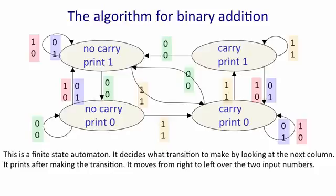So if you look on the top right, it's in the carry state and it's just printed a one. If it sees a one, one, it goes back into the same state and prints another one. If, however, it sees a one, zero or a zero, one, it goes into the carry state but prints a zero. If it sees a zero, zero, it goes into the no carry state and prints a one. And so on.